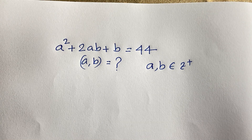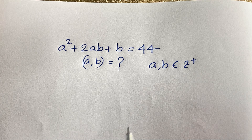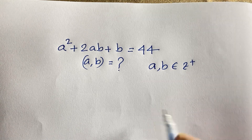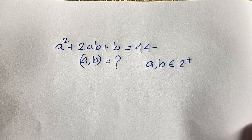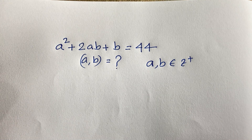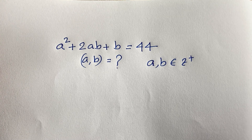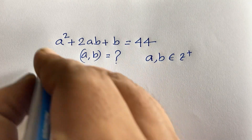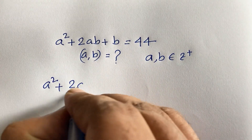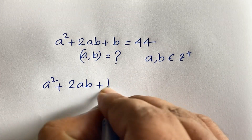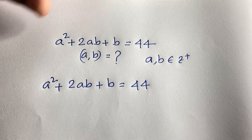Hello everyone. In this video we'll solve this interesting math olympiad question. The question is: a squared plus 2ab plus b is equal to 44, and we'll find out the value of a and b in this math olympiad question. So how to solve this? Let's start. Our question is a squared plus 2ab plus b equals 44.